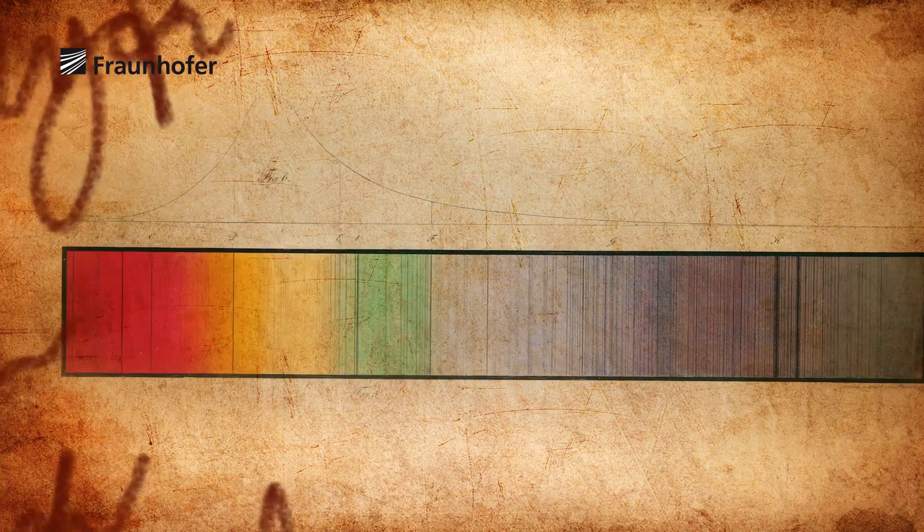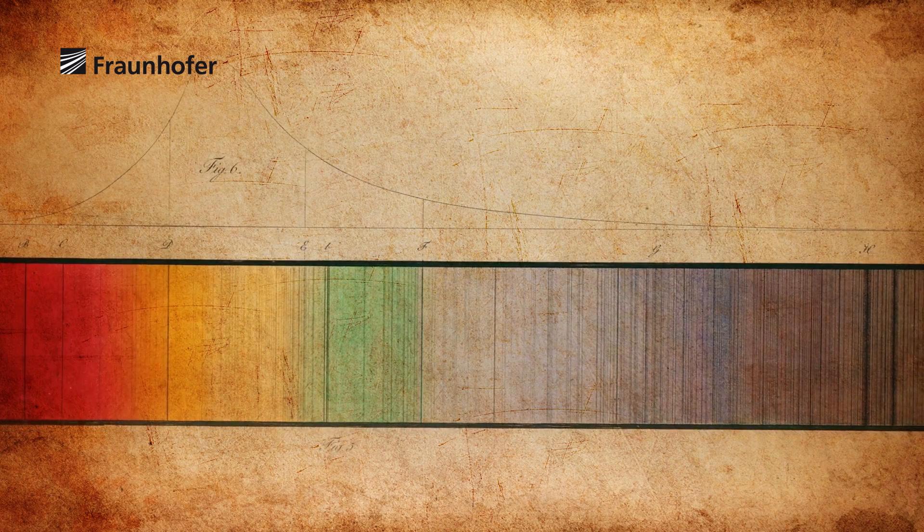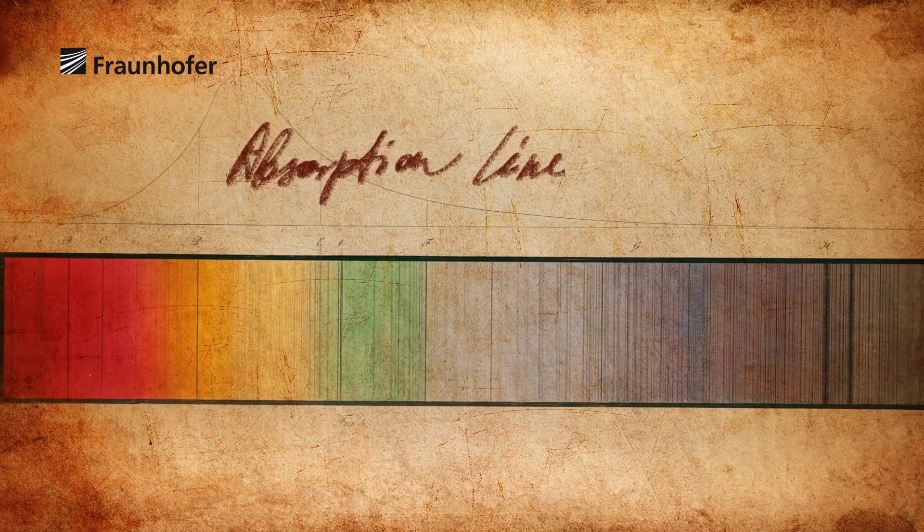There, this light is sucked in or absorbed by the chemical elements. In the process, they leave their characteristic fingerprint on the solar spectrum in the form of black lines. That's why we call them absorption lines.